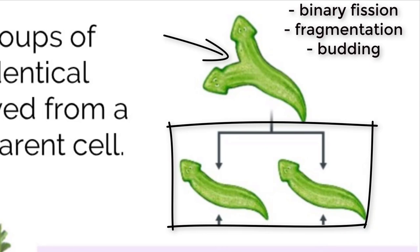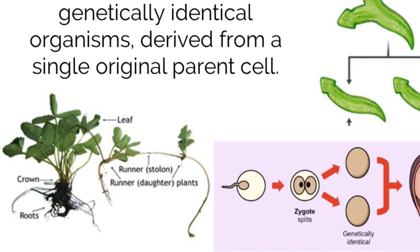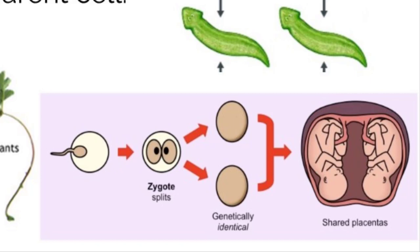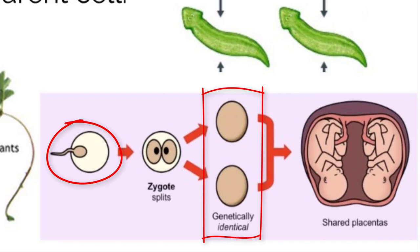Parts of the runner take root and develop into an identical clone of the original plant. Humans also possess a natural method of cloning as seen in monozygotic twins, better known as identical twins. During this process, a fertilized egg splits into two zygotes which continue to develop separately. Because the split occurred after fertilization, the two embryos possess the same DNA, technically making them clones of each other.